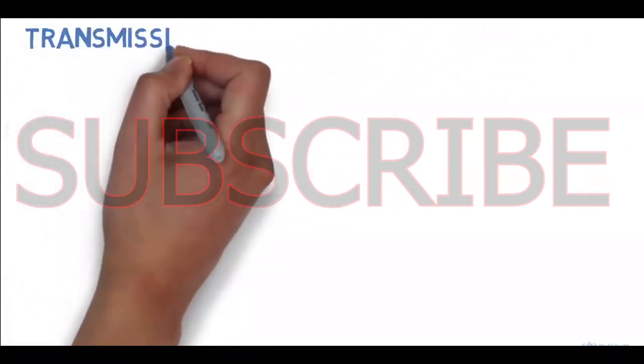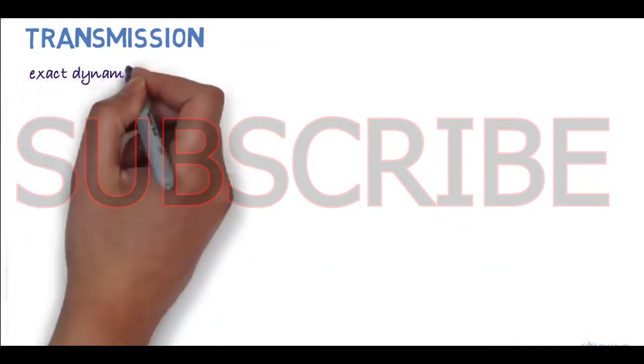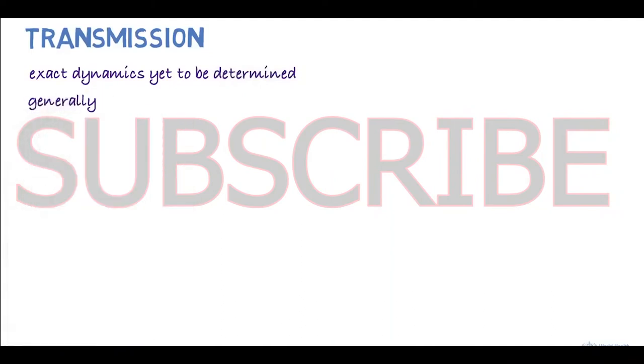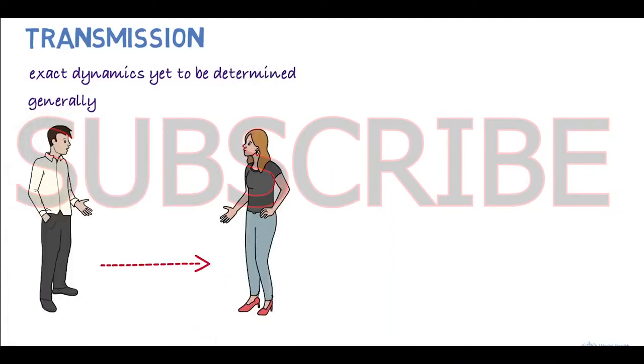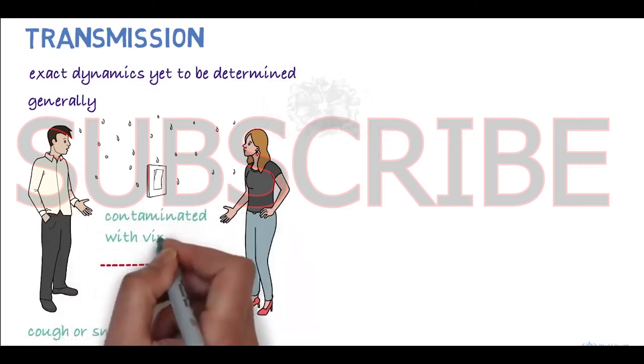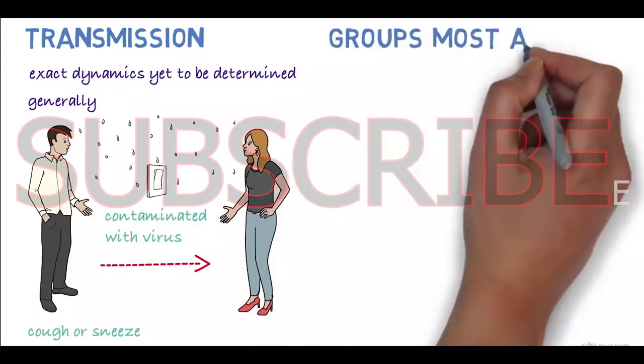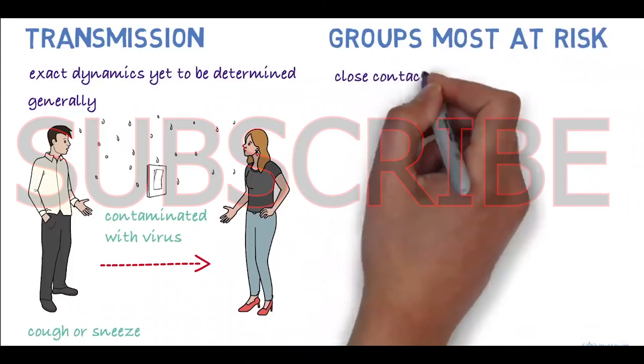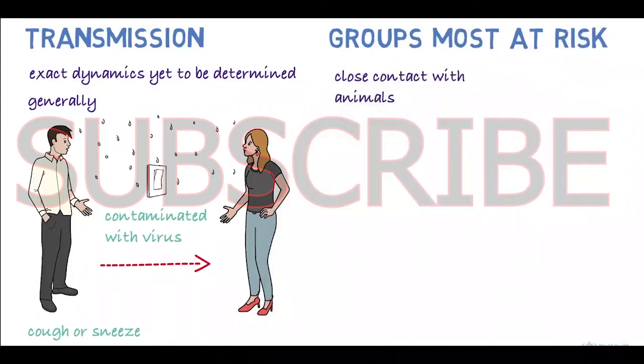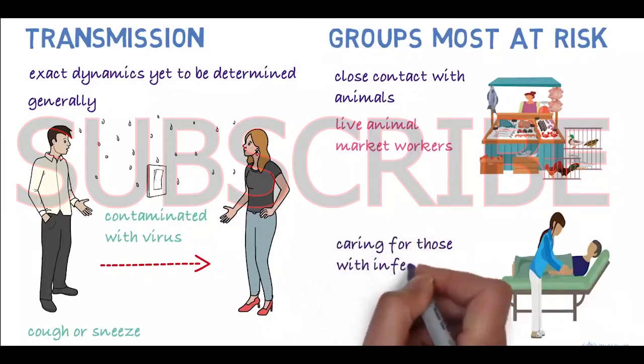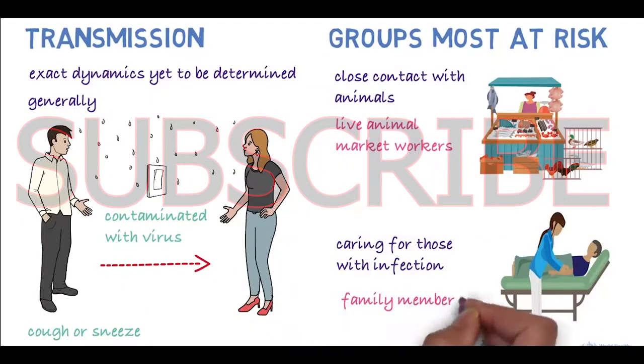How is it transmitted? The exact dynamics of how the virus is transmitted is yet to be determined. In general, respiratory viruses are usually transmitted through droplets created when an infected person coughs or sneezes, or through something that has been contaminated with the virus. People most at risk of infection from the novel coronavirus are those in close contact with animals such as live animal market workers, and those who are caring for people infected with the virus such as family members or healthcare workers.